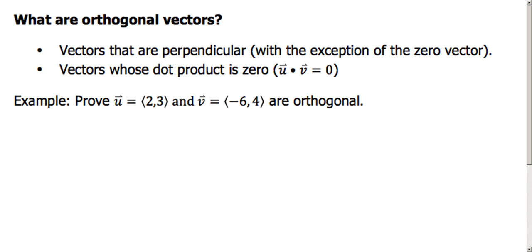Continuing with the theme of angles between vectors: what are orthogonal vectors? Orthogonal vectors are vectors that are perpendicular — except for the zero vector. Orthogonal is pretty much synonymous with perpendicular. To show or prove that two vectors are orthogonal, we can find their dot product. If their dot product is zero, then they are orthogonal. It's kind of a shortcut — we don't need to go through all the process of finding that angle. If we do the dot product and it's zero, then they must be orthogonal.